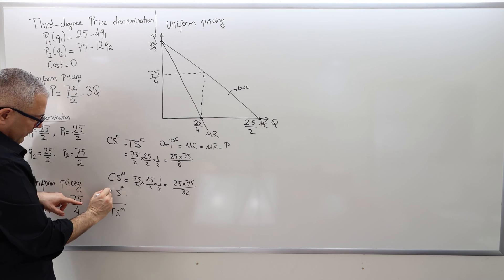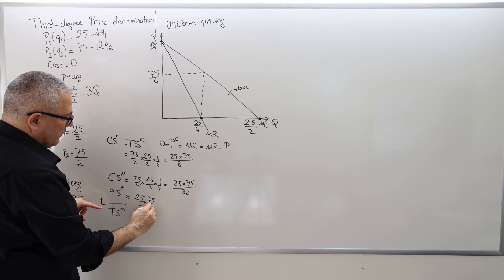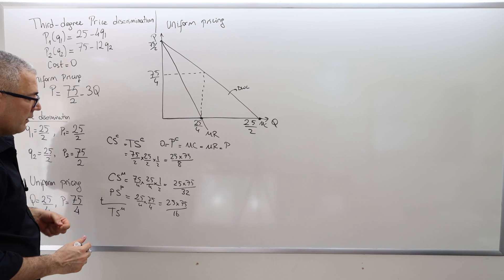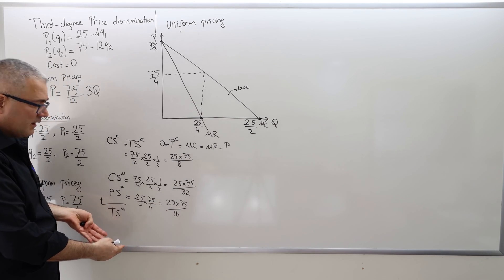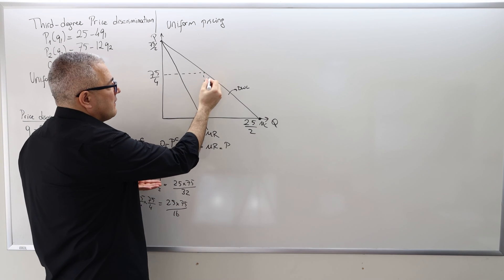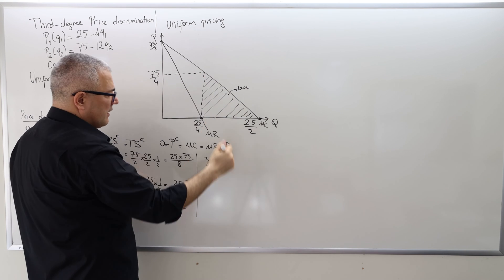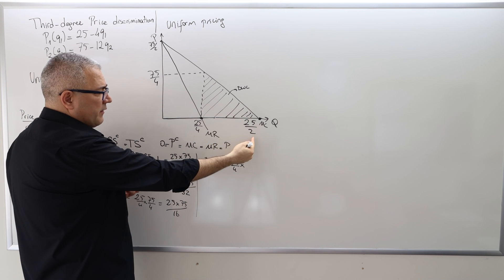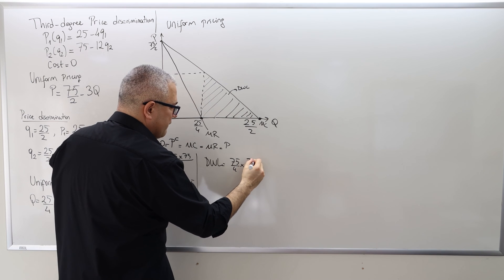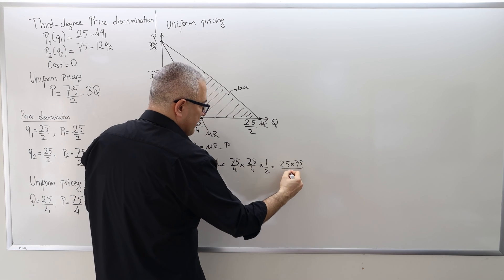That's the consumer surplus. The producer surplus is the rectangle: (25/4) × (75/4) = 25 × 75 / 16. I don't divide by 2 because it's a rectangle, not a triangle. For the deadweight loss, I calculate the area of the triangle directly: height is 75/4, base is 25/2 − 25/4 = 25/4, times 1/2 — giving 25 × 75 / 32. In an exam without a calculator, just leave it in this form.